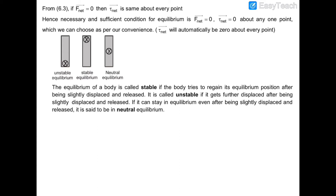Now we can see that equilibrium is of three types. The first one is unstable equilibrium, in which you can see that if this rod is hinged from the lower position and it is in equilibrium right now, but if I displace this rod slightly by some angle then it would topple down and it would never regain its original position.